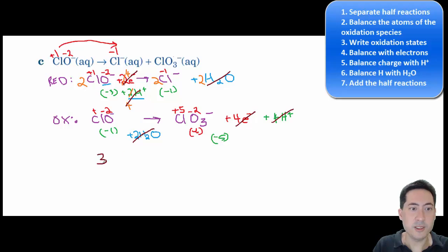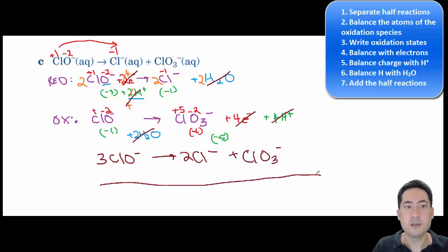And so we add that together. So that's a total of three ClO minuses. It gives us two Cl minuses and one ClO three minuses. You're going to have to add the states in as well. Okay. And so that's number three done.